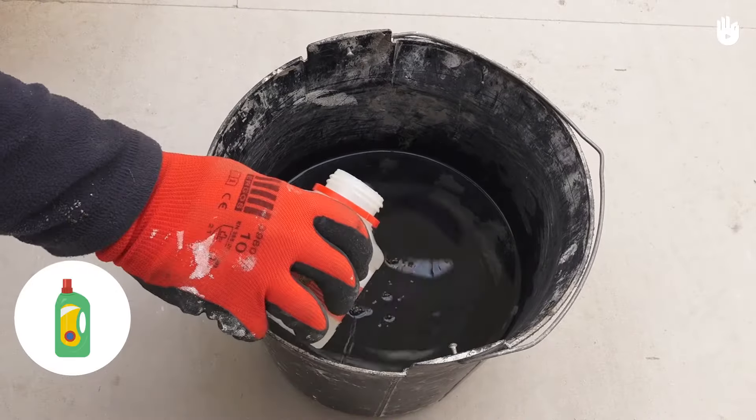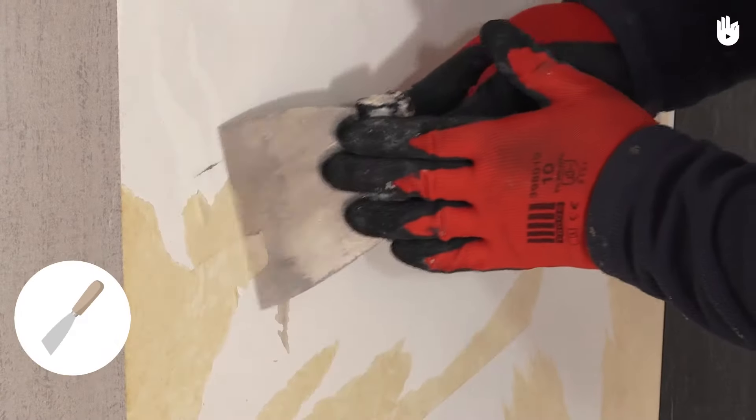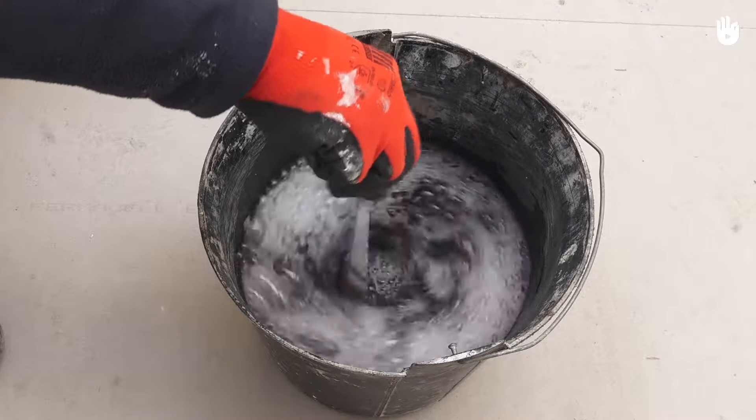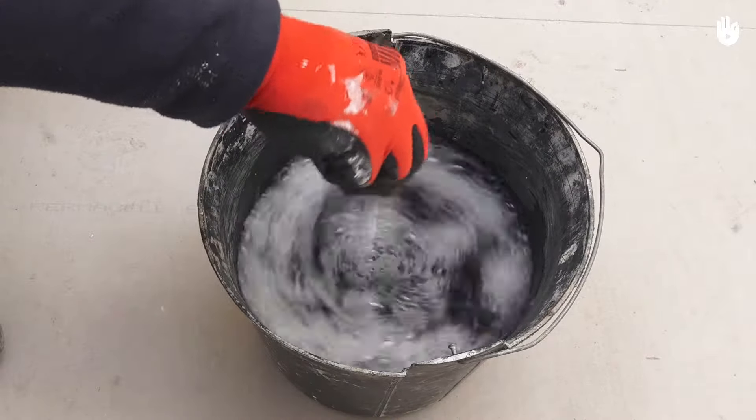Prepare a bucket of water, a wallpaper stripping product, a spatula or putty knife, and a sponge. In the proportions indicated by the product manufacturer, mix the water and the product together with a stick.